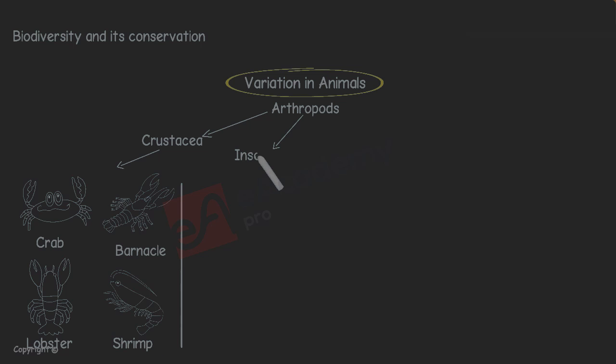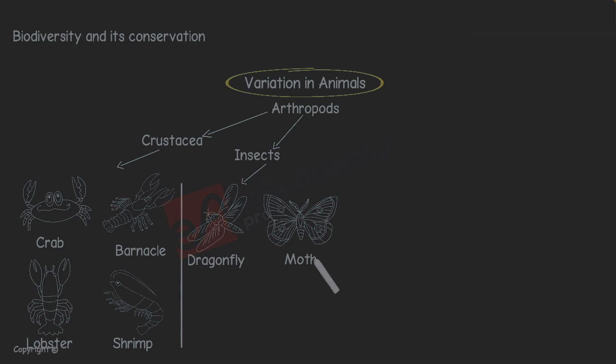Insects have six legs and many have two pairs of wings. Examples: Dragonfly, Moth, Ladybird, Wasp.